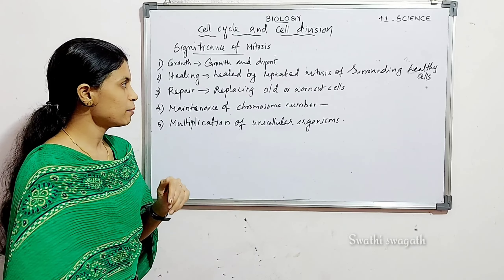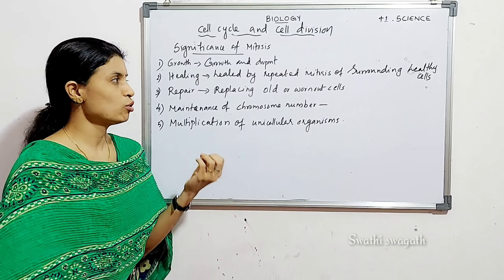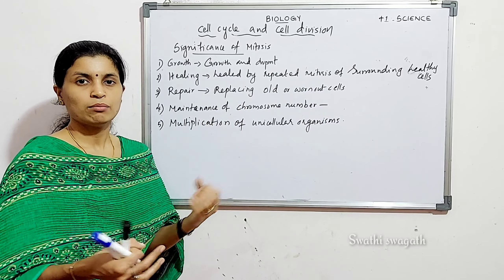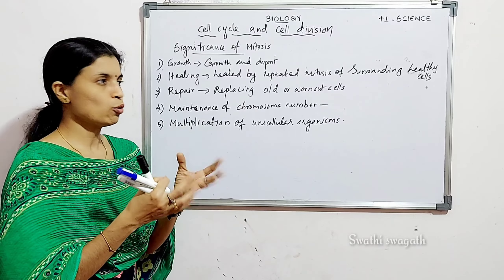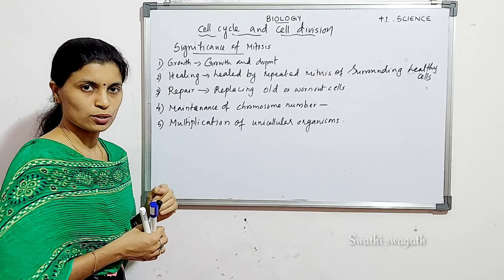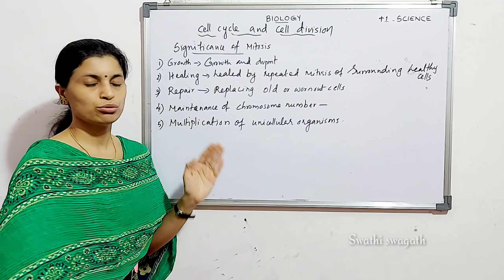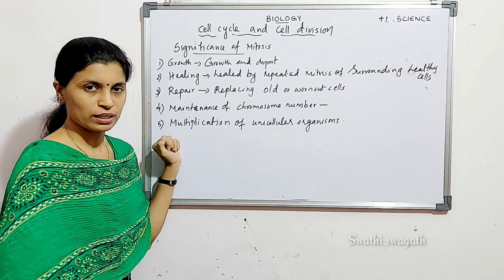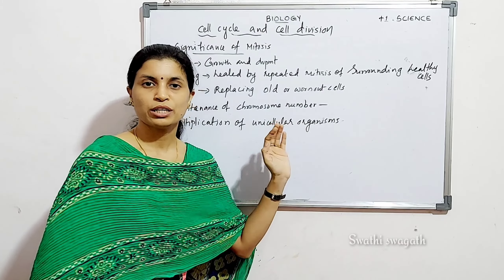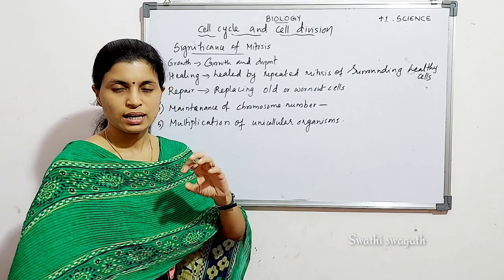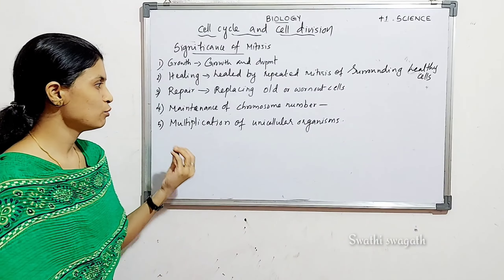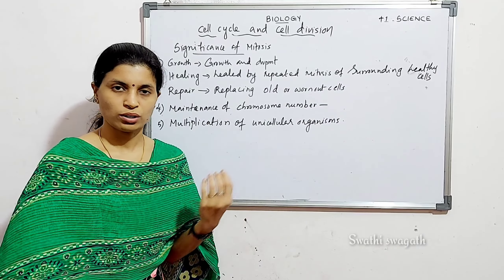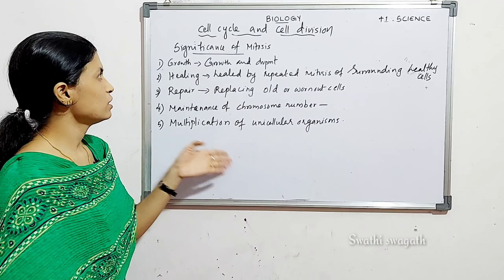Third, repair — mitosis helps to replace old and worn-out cells, such as daily skin cells. Fourth, maintenance of chromosome number — since mitosis is equational division, the chromosome number is maintained across generations of cells, helping the organism. Fifth, multiplication of unicellular organisms — mitosis helps unicellular organisms like amoeba multiply through binary fission, where one parent cell divides and forms two daughter cells by a mitotic type of division.